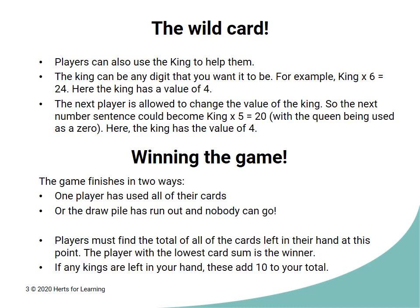The next player is allowed to change the value of the king if they are not covering it up. So the next player might keep the king but lay a 5, a 2, and a queen to make the number sentence king times 5 equals 20. Remember that the queen represents the digit 0.